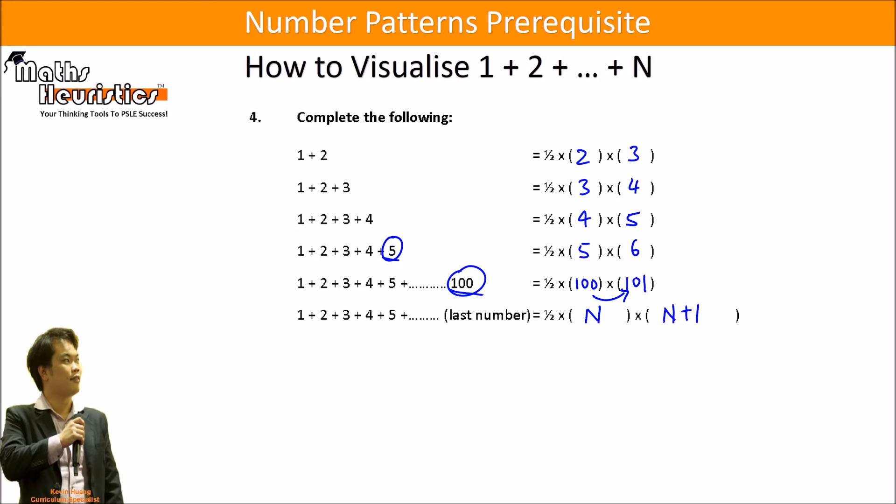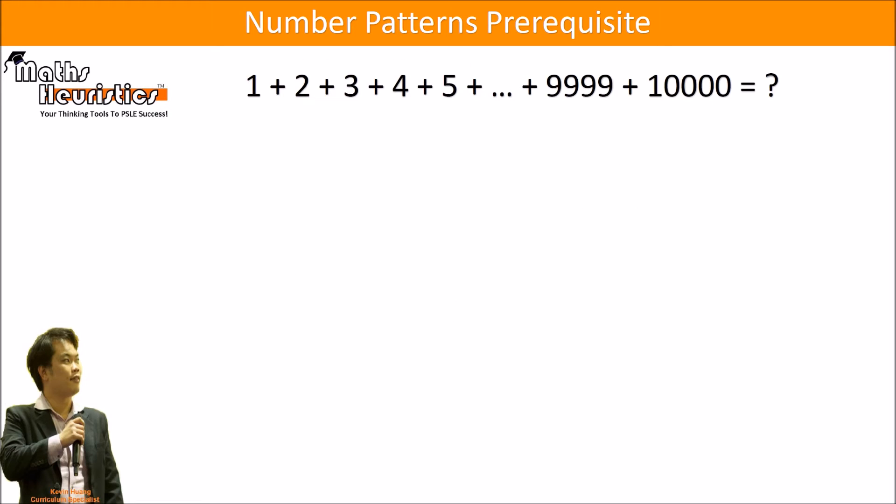Okay? So let's go back to that question that we had earlier: 1 plus 2 plus 3 plus 4 plus 5 all the way up to 10,000. By direct application of that formula, that would just be half times 10,000 times 10,001.